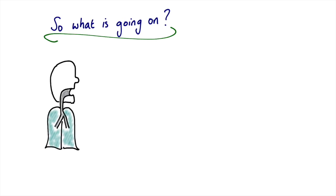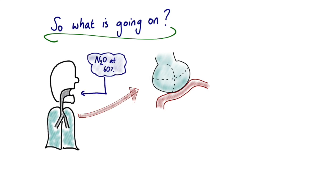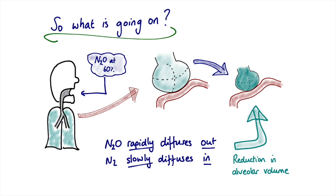Now let's consider the same patient, again focusing in on the alveoli and pulmonary capillary, but this time our patient is breathing nitrous oxide at 60 percent. Because nitrous oxide is so soluble in blood, there will be rapid diffusion of nitrous oxide down its concentration gradient into the pulmonary capillary. This will be partly balanced by inward diffusion of nitrogen, but the rate of these processes is vastly different because of the difference in solubility. So there's rapid diffusion of nitrous out with relatively slower diffusion of nitrogen in. More gas is leaving the alveoli than is coming back in, and as a consequence of that, you get a reduction in alveolar volume.